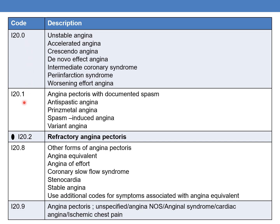Next is I20.1 — angina pectoris with documented spasm. Whenever the physician documents angiospastic angina, Prinzmetal angina, spasm-induced angina, or variant angina, in all these cases you need to code I20.1.